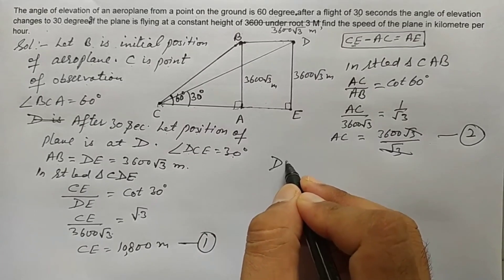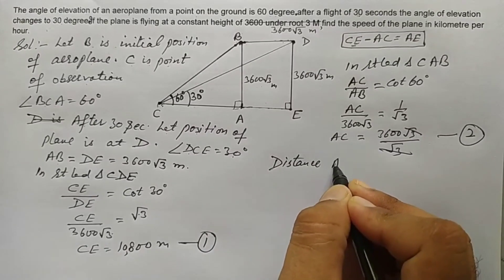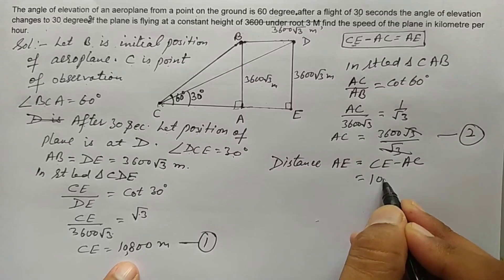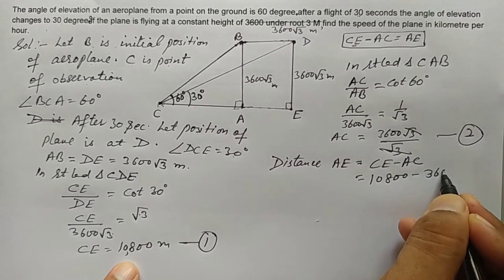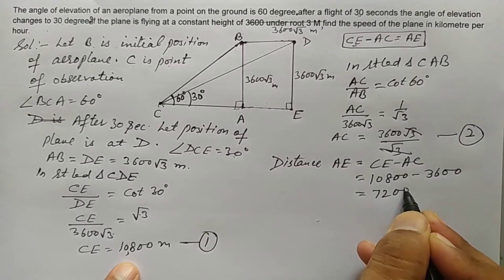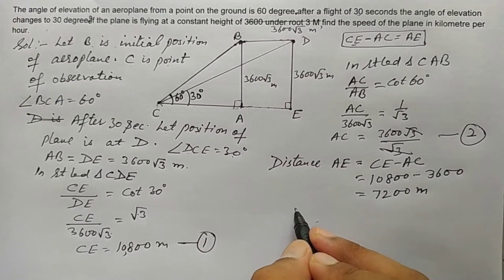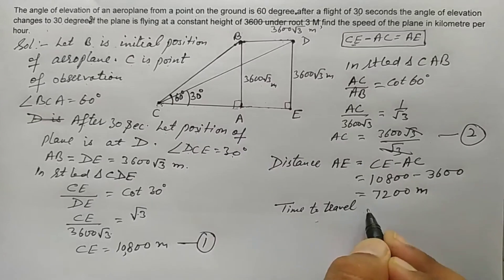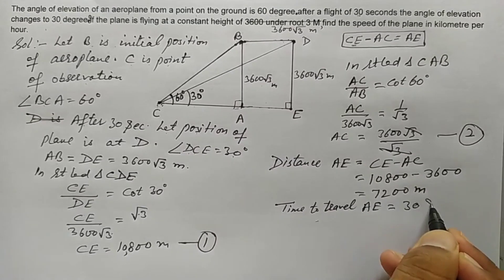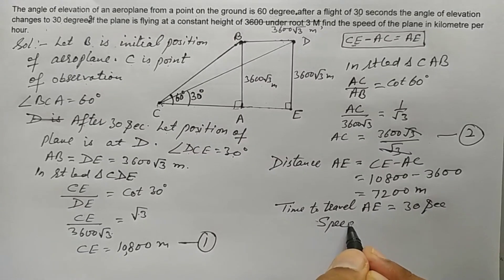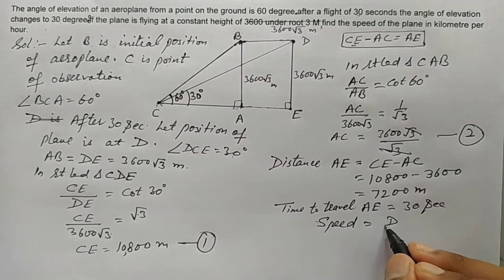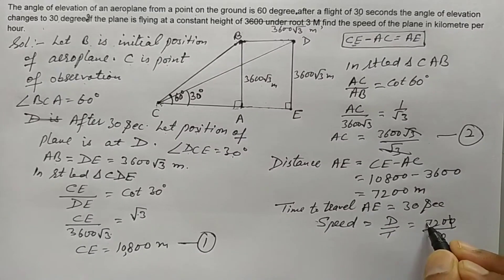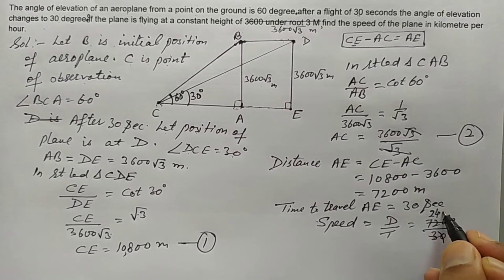Distance AE equals CE minus AC equals 10800 minus 3600 equals 7200 meters. The time taken to travel AE is 30 seconds. So speed equals distance over time equals 7200 over 30 equals 240 meters per second.